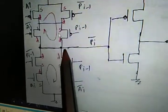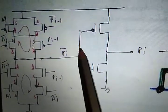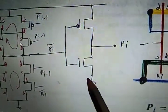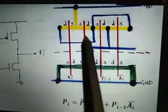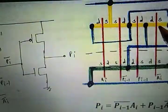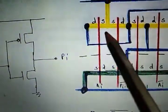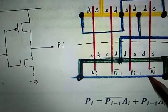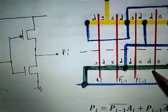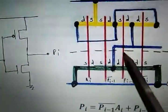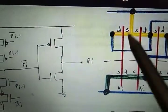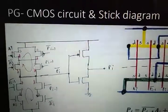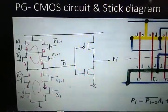An additional inverter (one pMOS and one nMOS) is added to the CMOS circuit to obtain the non-complemented PA output. In the stick diagram, yellow indicates pMOS, green indicates nMOS, red shows four polysilicon lines for PA_minus1, PA_minus1_complement, A, and A_bar, and blue indicates input and output connections. This completes the explanation of the CMOS parity generator circuit and stick diagram.